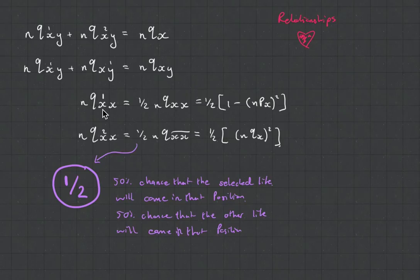that is saying that the first life has to die before the second life. And that's equal to the probability that one of the lives dies times a half. And the half—it's the 50% chance that that selected life will come in that position.